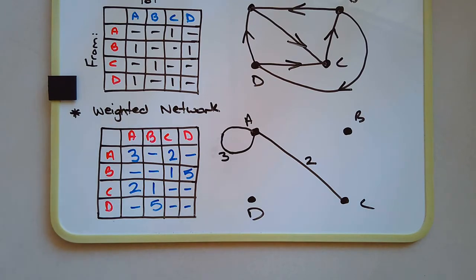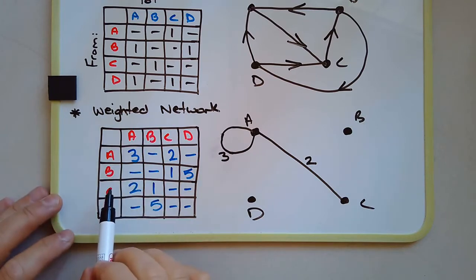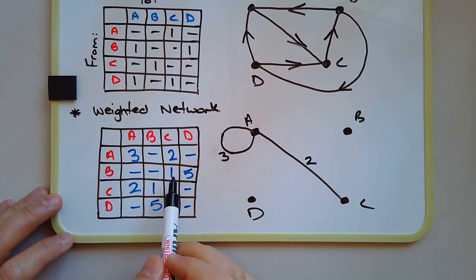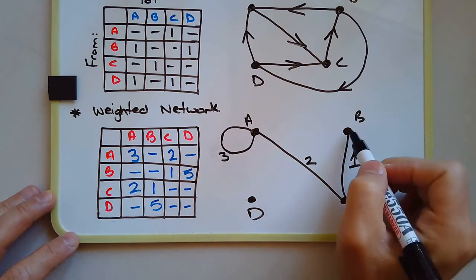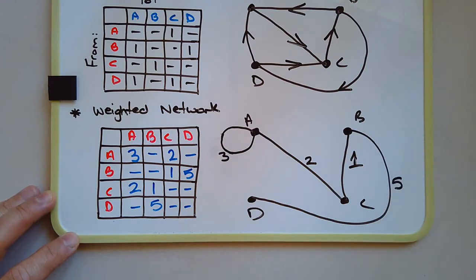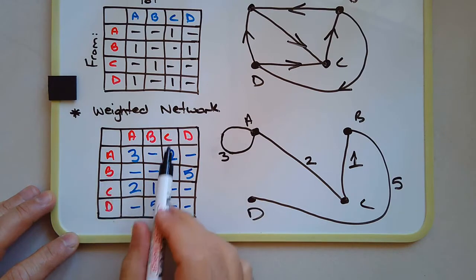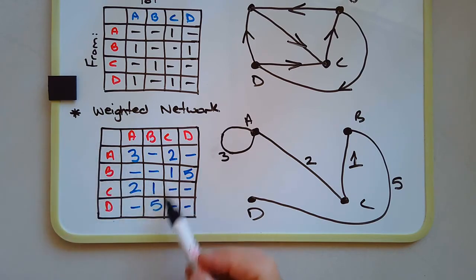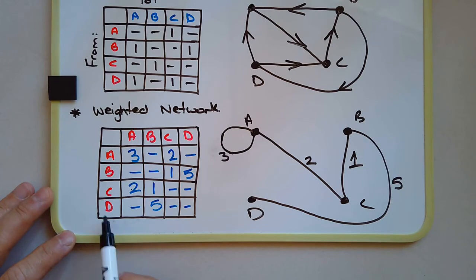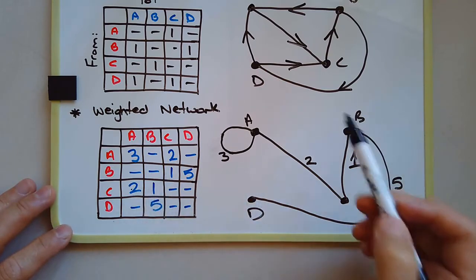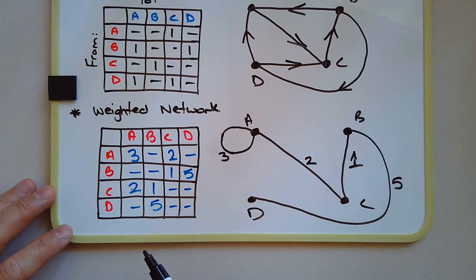The last example we'll do will be a combination of both. Continuing: B to C has an edge worth one, and B to D is worth five. C to A — that edge is already there, worth two. Notice that again across the diagonal it's symmetrical: one, one, five, five, two, two. You can just look at one half of the table. D to B is worth five — already drawn. Since it's not directed, you don't have to put an edge back the other way.